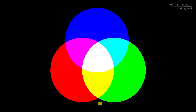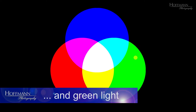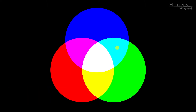Now if we switch on the third slide projector, the one with the blue filter, then the areas where blue light is added to the red light results in this color. And you might be tempted to call this pink, but the technical term for this color is magenta. And when we add blue light and green light, the resulting color is cyan.